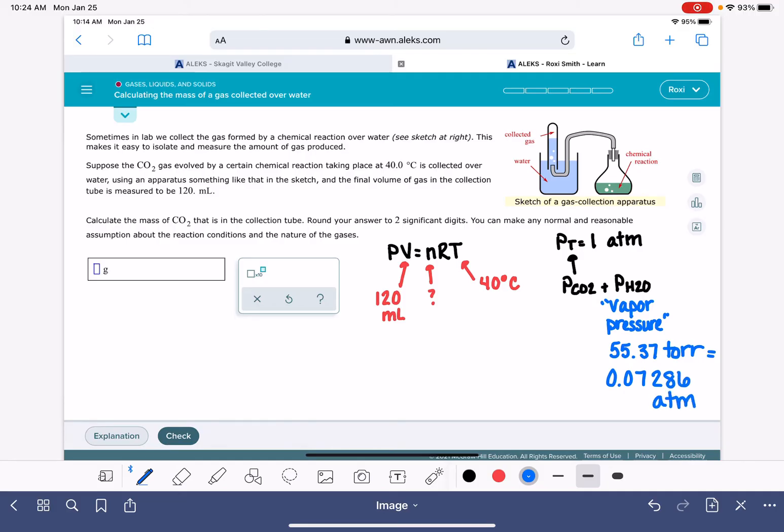We can use Dalton's law of partial pressure. I'm going to squeeze that down here. The total pressure is the partial pressure of the CO2 plus the partial pressure of the H2O. Using Dalton's law, we get the partial pressure of CO2 is the total pressure minus the partial pressure of H2O.